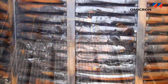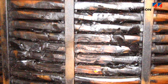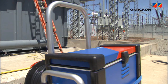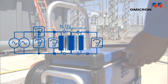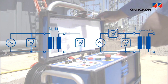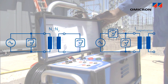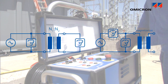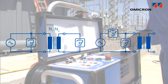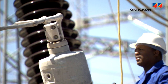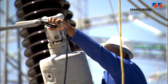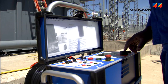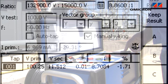With the CPC 100, the ratio and magnetization current — or excitation current — can be measured at the same time. At the transformer's primary side, high voltage is applied to one phase.